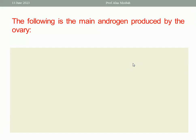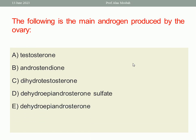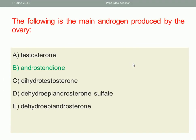Next: the following is the main androgen produced by the ovary. A. Testosterone. B. Androstenedione. C. Dihydrotestosterone. D. Dehydroepiandrosterone sulfate. E. Dehydroepiandrosterone. The one best response is B, Androstenedione. Testosterone — about 50% — is produced in the ovary as androstenedione.